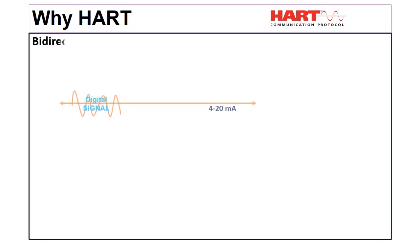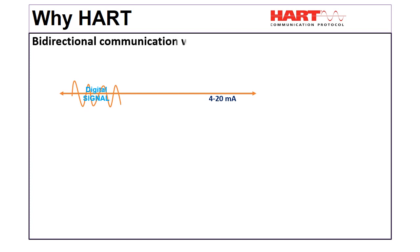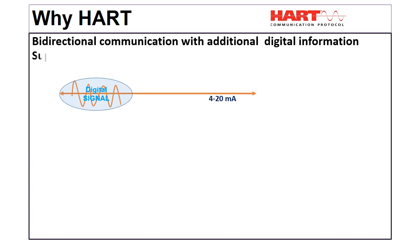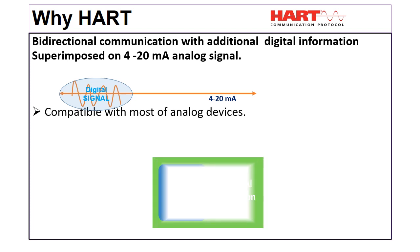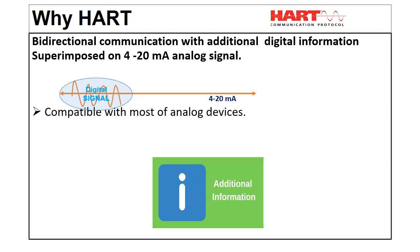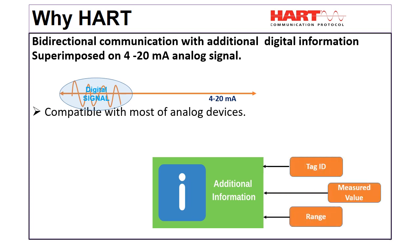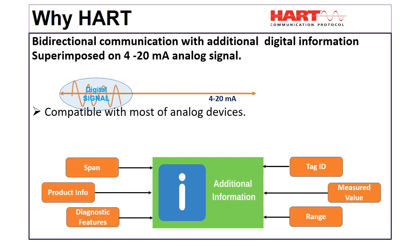HART is a bi-directional communication protocol in which additional information can be transmitted by superimposing a digital signal on the existing 4 to 20 milliampere analog signal. HART is compatible with most analog devices. HART provides additional information such as device tag ID, measured value, range, span, product information, and diagnostic features.